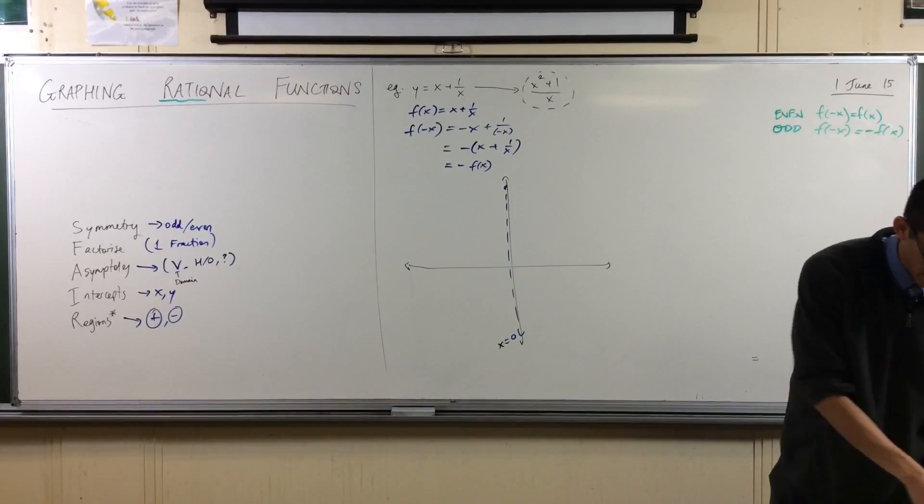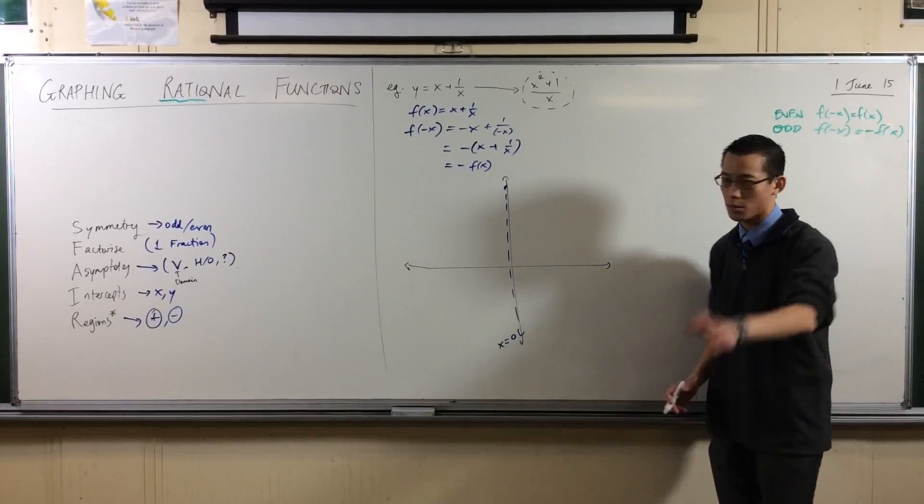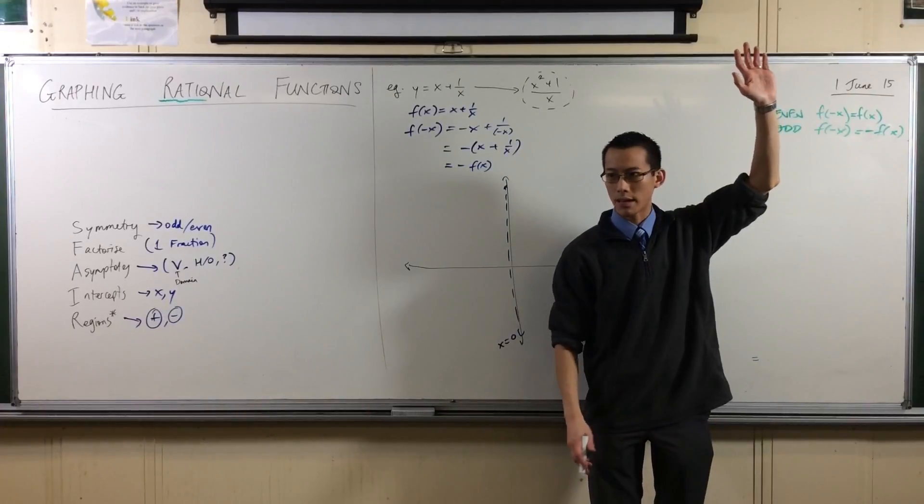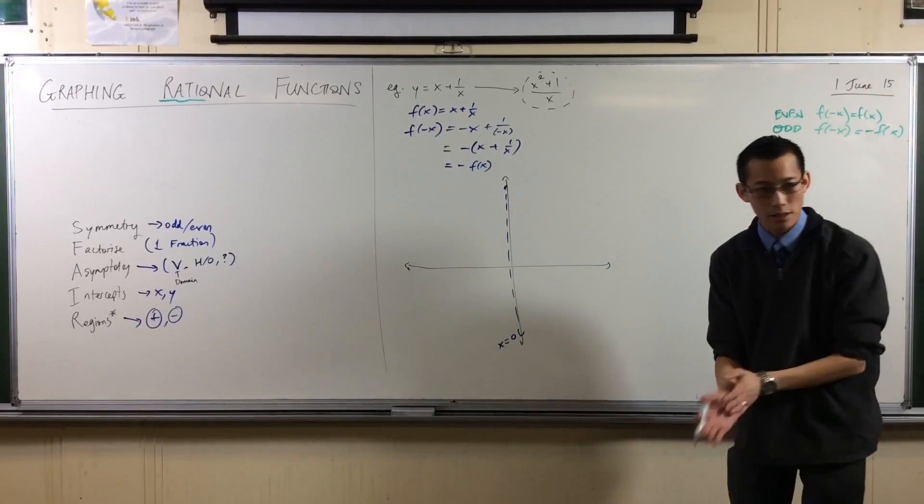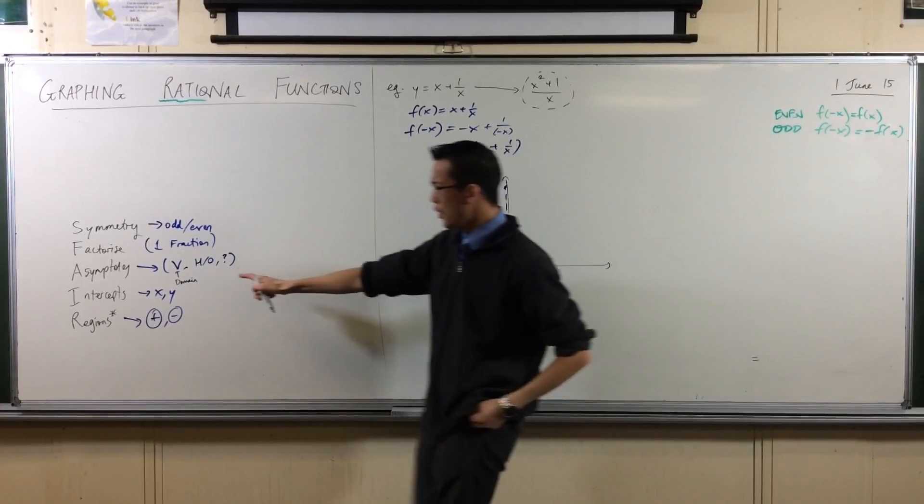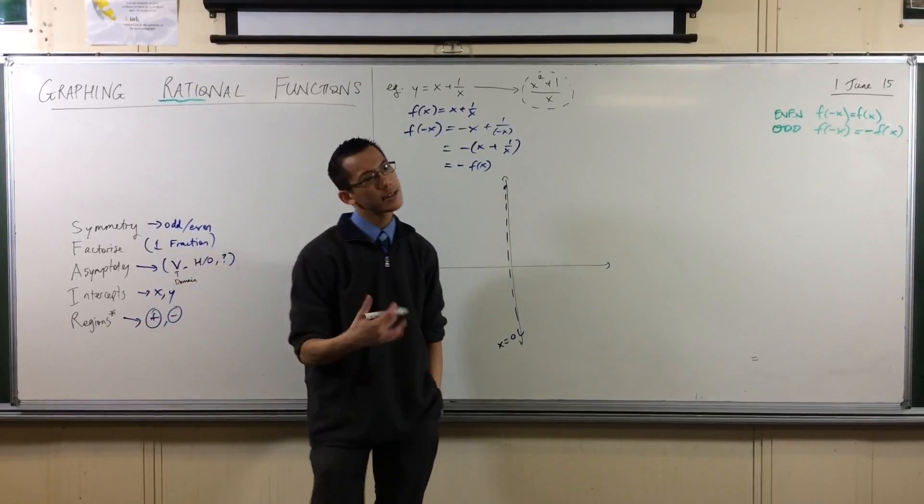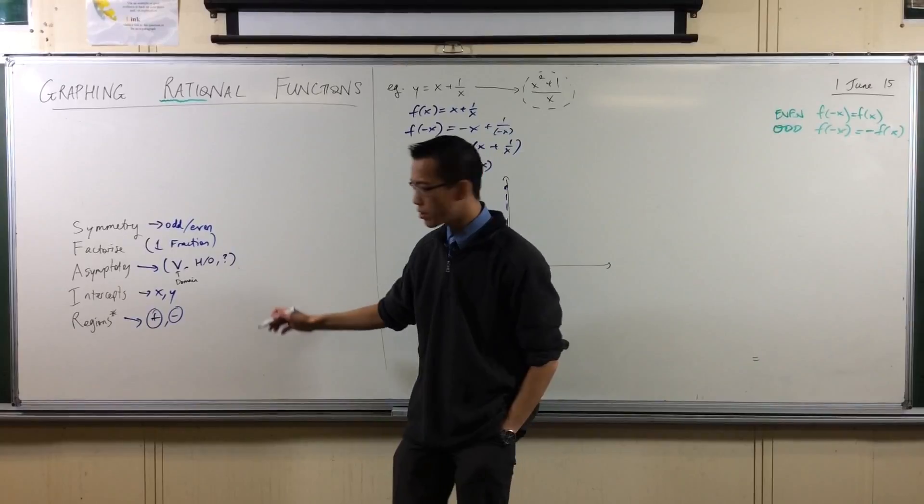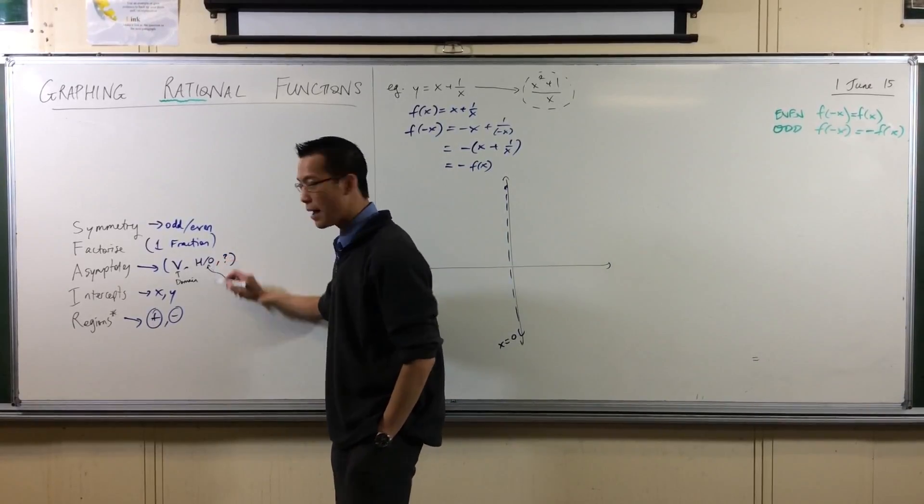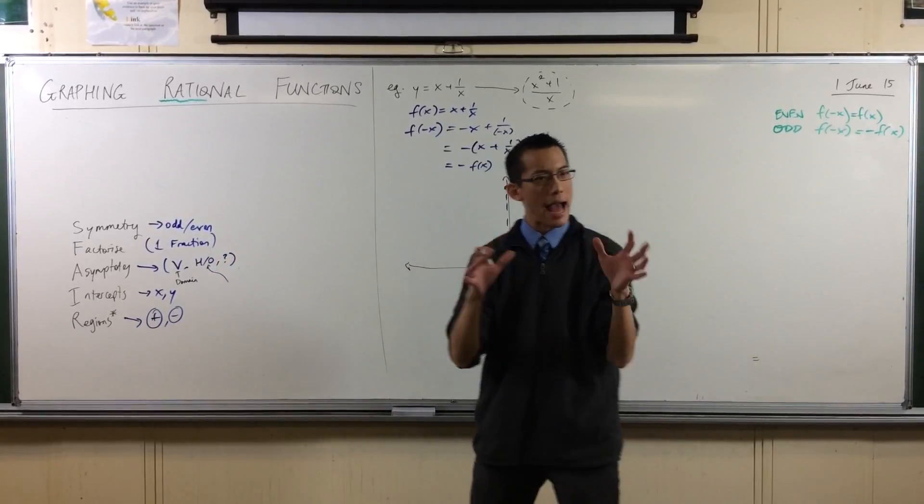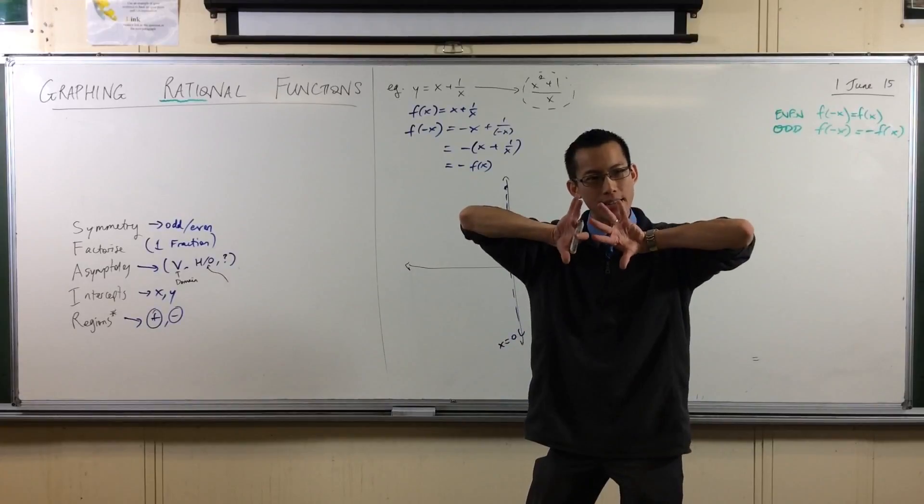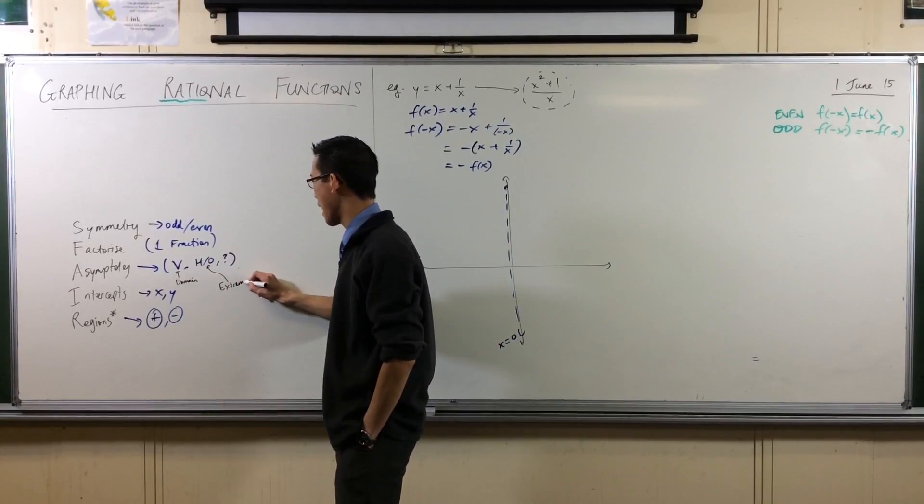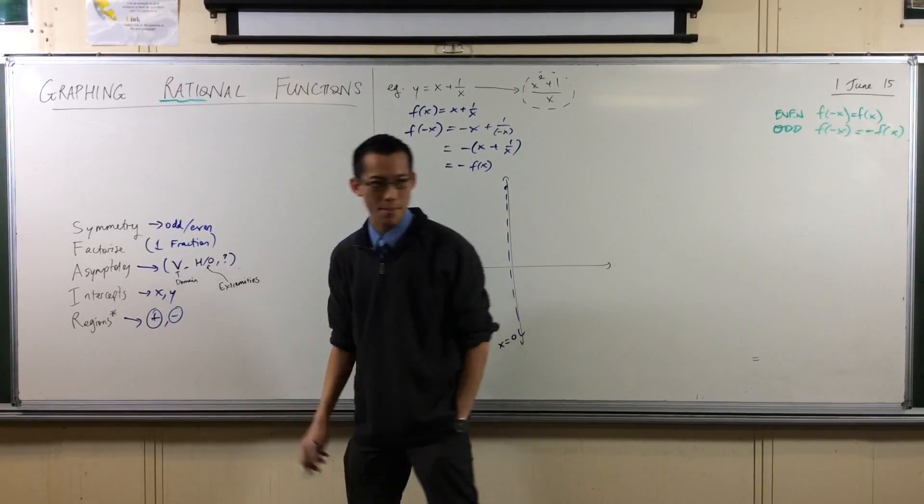We've done our vertical one. Now, horizontal and oblique asymptotes. Just hands up quickly. Who's met horizontal and oblique asymptotes before? Okay, excellent. So about half of you. Vertical asymptotes are about where your graph does and doesn't exist. More so doesn't. Horizontal and oblique asymptotes are about something quite different. They're about how the graph is behaving at its extremities. That's a really important word. How the graph is behaving at its extremities.